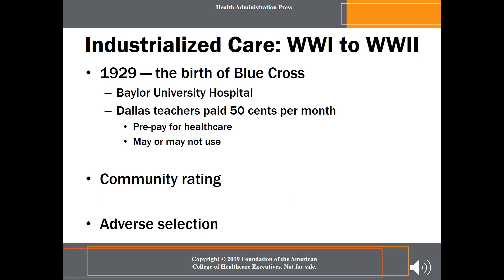Health insurance took a significant step forward in 1929 when Baylor University Hospital provided Dallas School District teachers 21 days of hospital coverage for 50 cents per month. The teachers were prepaying for care they might or might not need at some point in the future. This was the birth of Blue Cross plans, in which hospitals provided coverage for the insured. At this time, commercial insurance companies maintained their focus on life, property, and casualty insurance and avoided health as a subject for coverage because they feared adverse selection, which occurs when healthy people do not purchase coverage. The commercial insurers worried that if only people who were sick bought insurance, the rates would skyrocket because the cost of care would also be quite high.